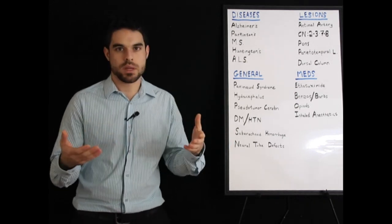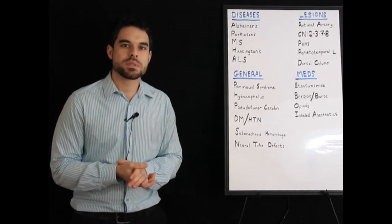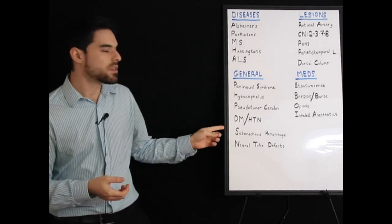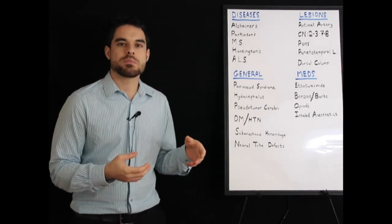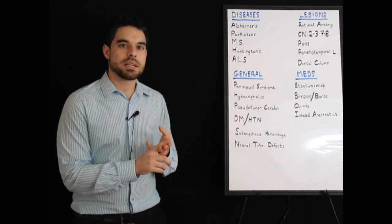Subarachnoid hemorrhage is also a bleeding into the brain. Here it's also caused by aneurysms, by a popping aneurysm here, the berry aneurysm. This is going to be the worst headache of my life, the thunderclap headache. The risk factors include Marfan syndrome, Ehlers-Danlos, and polycystic kidney disease.